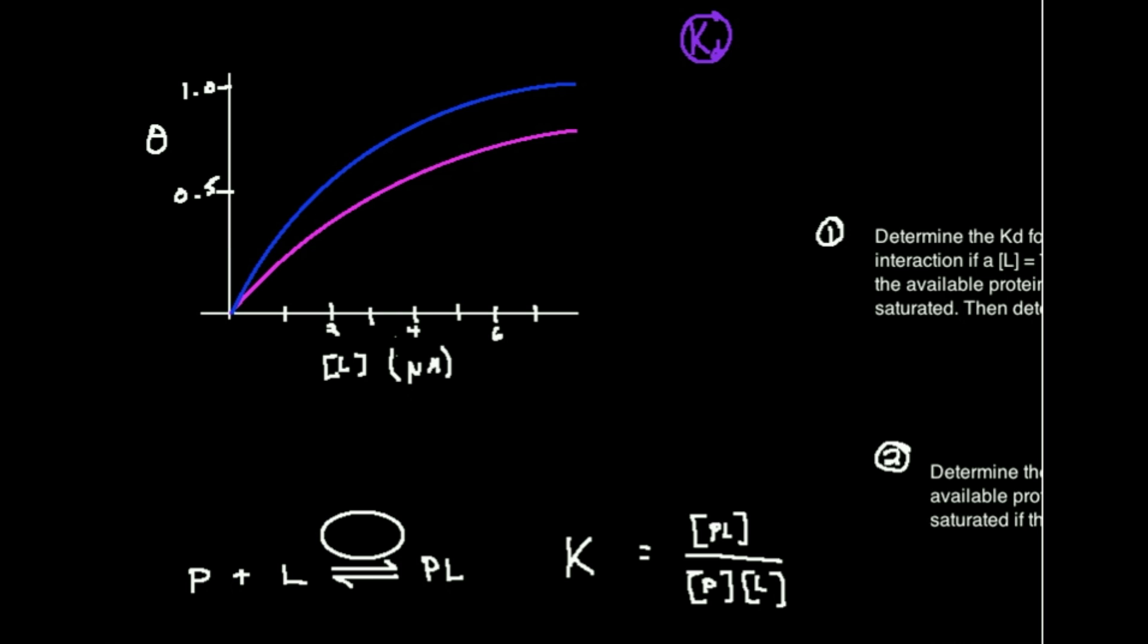So this is what we call a binding curve. On the y-axis we have this variable called theta. What theta is, is the percentage of protein that have bound ligand. Another way of looking at it, because if you have a ton of proteins, they all have some number of binding sites for the ligand. And theta is also the percentage of binding sites occupied by the ligand, whatever that ligand happens to be.